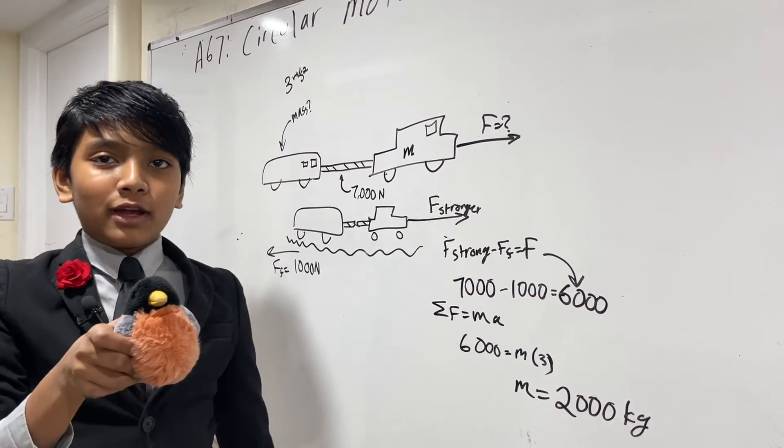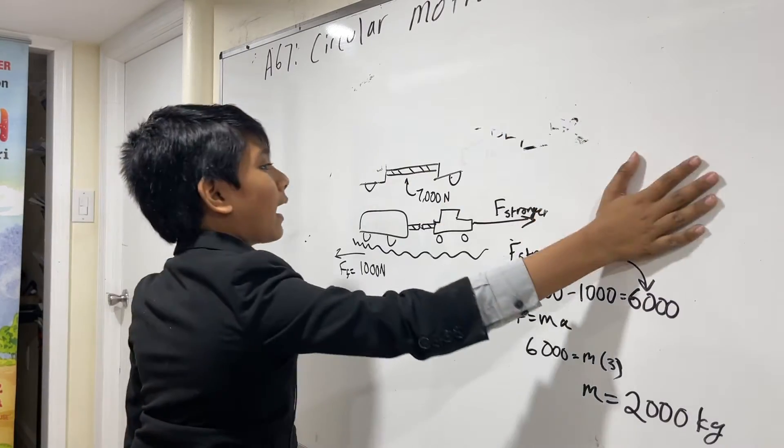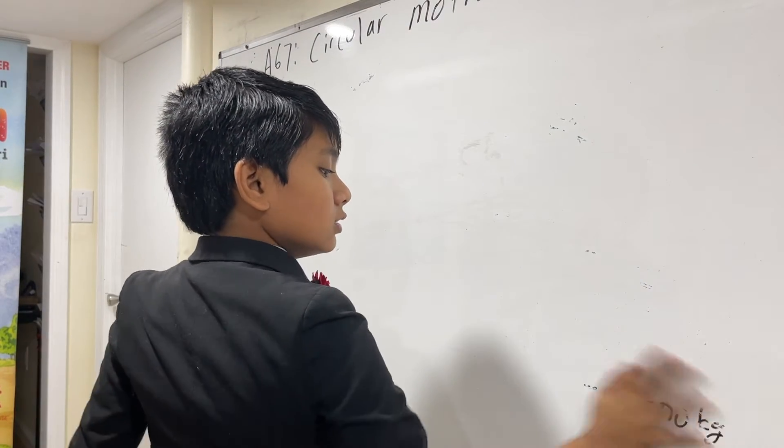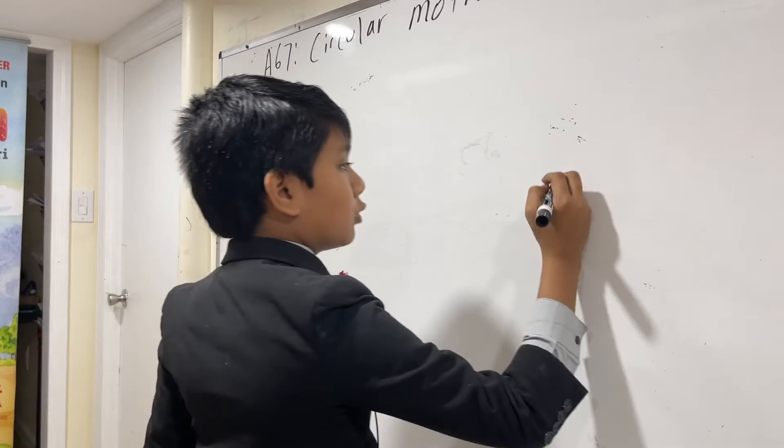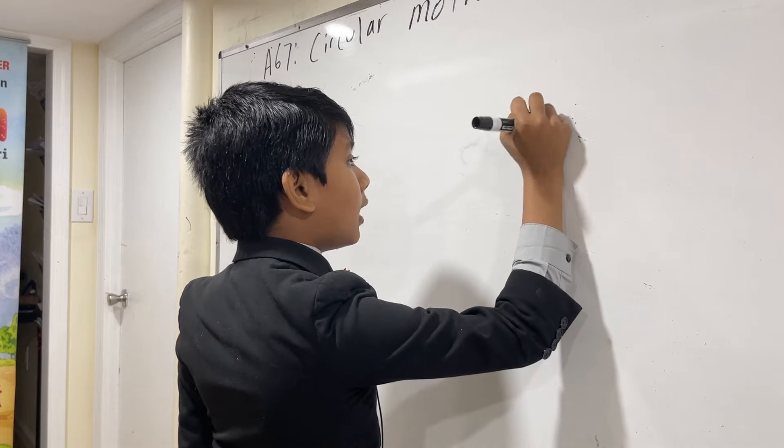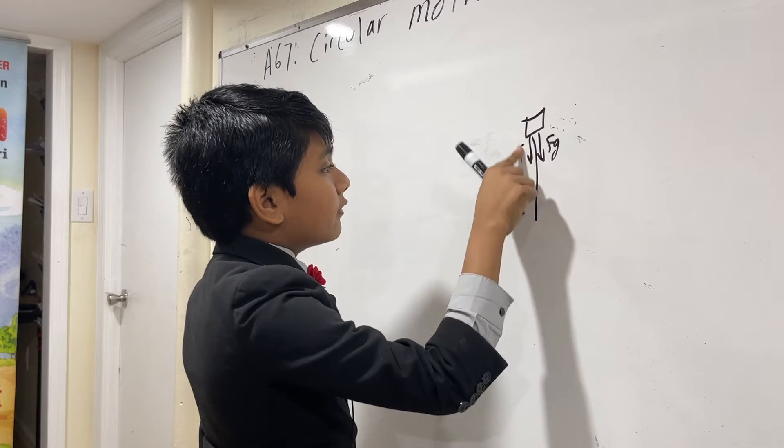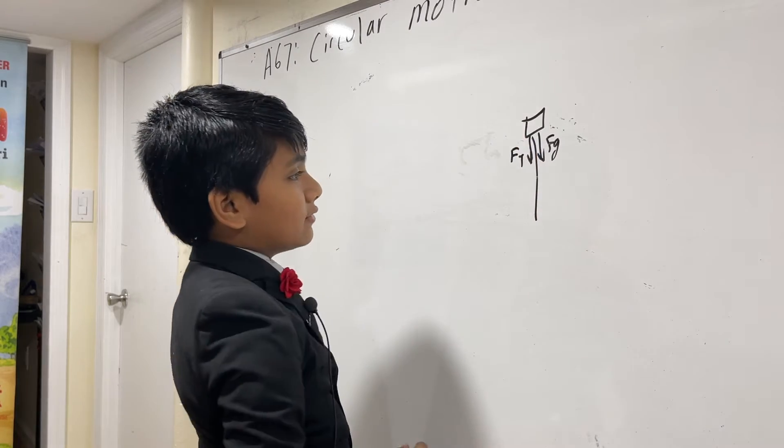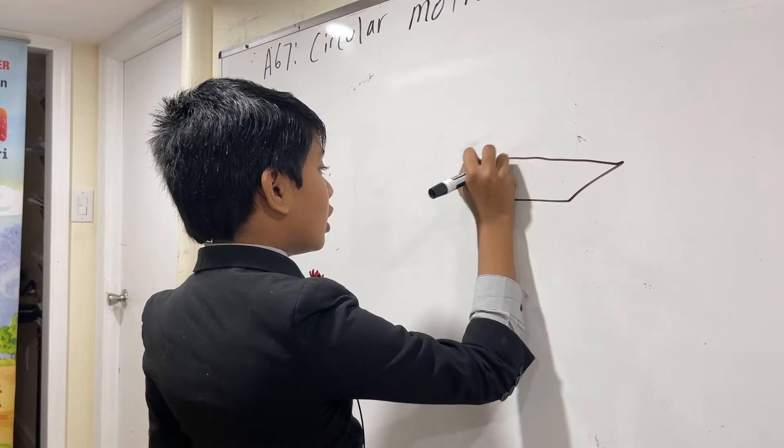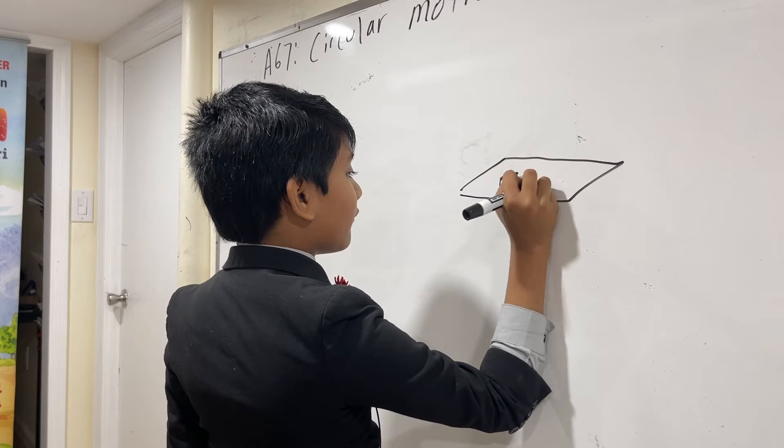But before we do, bird break. Okay. Bye, bird. Alright. So, let's move on to our next problem. So, here, we're not dealing with the vertical circles anymore. Like when you spin something in the vertical direction and when it gets to the top, FG and FN, or if not FN, then FT, act as FCs. But, in this case, we're doing it as a horizontal circle. So, that means that it's being spun horizontally and FG and FN don't matter.